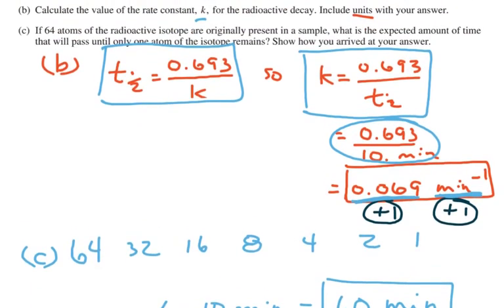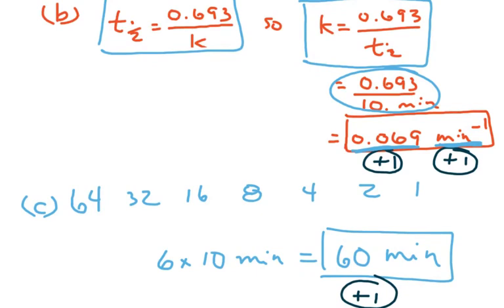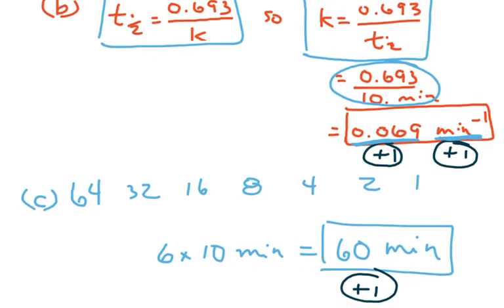So we could do a very simple kind of calculation. Here we have 64, and then after 64 we would go down to 32 after one half-life. 32 would go down to 16, 16 would go down to 8, down to 4, down to 2, and down to 1. That's 1, 2, 3, 4, 5, 6 half-lives, 10 minutes each.